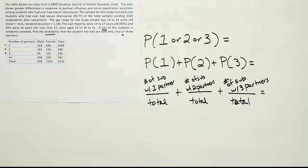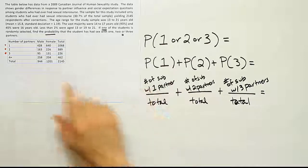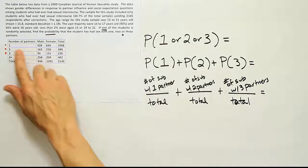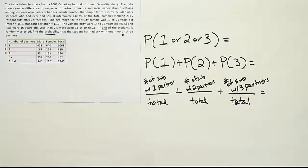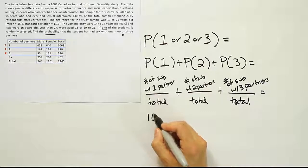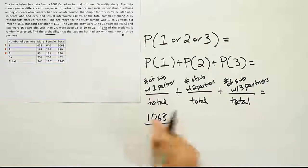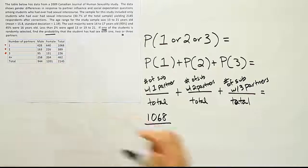At that point, we just have to count up the number of subjects with one partner. So I come over here. Number of subjects with one partner, 1,068 total. So 1,068 divided by the grand total, which is 2,145.